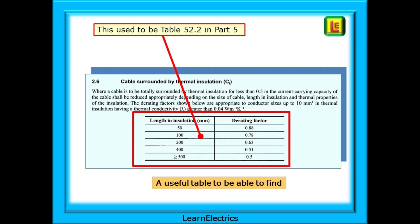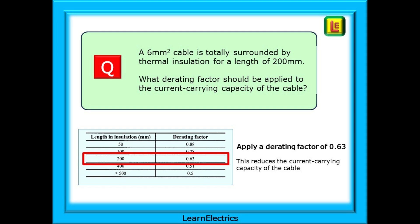This is the table that used to be in part 5 of the book. Now it is item 2.6 in appendix 4 and no longer listed as a named table. It is a very useful item to be able to find as it is a popular choice with the exam question setters. So to answer our question, what derating factor should we apply to our 6 millimetre cable? Item 2.6 gives the answer. For a cable totally surrounded by thermal insulation for 200 millimetres of its length, we should apply a derating factor of 0.63. This effectively reduces the current carrying capacity of the cable.